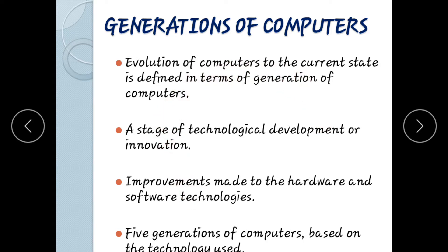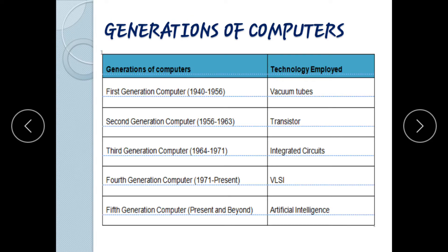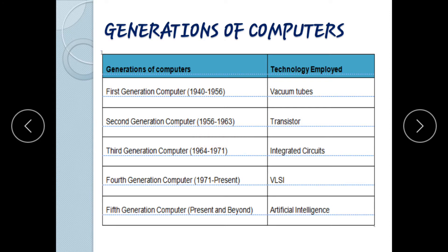The generations of computers: the first generation computer spans 1940 to 1956, and used vacuum tubes. The second generation spans 1956 to 1963, and used transistors.